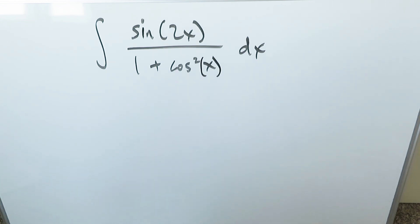I have integral sine 2x divided by 1 plus cosine squared x dx. Indefinite integral.